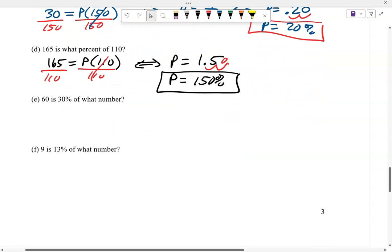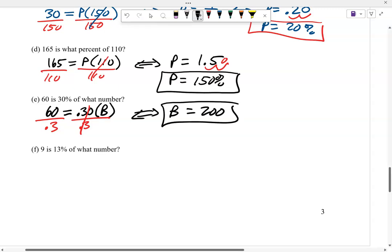60 is 30% of what number? I'm going to convert that to a decimal, 0.30 of times what number? Now we solve for B. Let's divide by 0.3 on both sides. B ends up being 60 divided by 0.3, which gives you 200. In other words, 60 is 30% of 200.